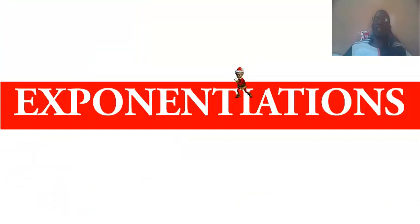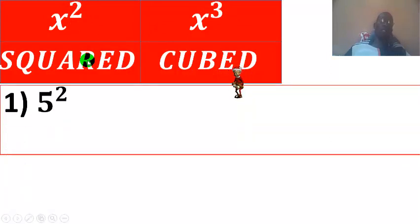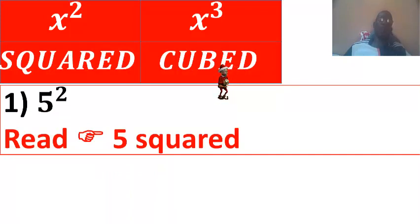Exponentiation, exponents. Example, X squared and X cubed. So, squared, cubed. Example, 5 squared is read 5 squared, like P squared, Peter and Paul. 5 squared.